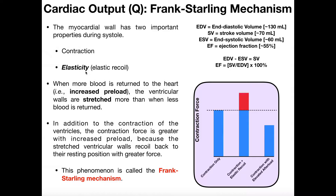This is important whenever more blood is returned to the heart, which is common during exercise or a fight-or-flight response. When more blood is returned to the heart during those situations, you have what's called an increased preload, which we defined in the previous video. When more blood returns to the ventricles, the ventricular walls are stretched more than when less blood is returned — higher volume means more wall stretch, kind of like a balloon.